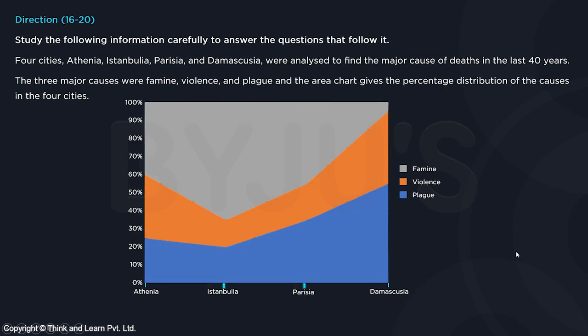Set number four, questions 16 to 20. Four cities — A, I, P, and D — were analyzed to find the major causes of deaths in the last 40 years. The three major causes were famine, violence, and plague. An area chart gives the percentage distribution of the causes in the four cities.